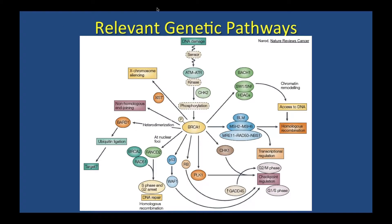Beyond BRCA1, there are other relevant molecular pathways being tested clinically. This slide shows BRCA1 in the middle and other molecular pathways that were discovered to have similar effects — acting as molecular spell checkers preventing DNA damage. Sometimes mutations are found in these other genes that give risks similar to BRCA1 and BRCA2.